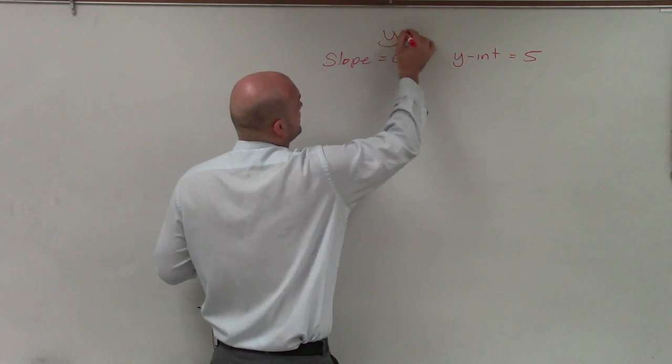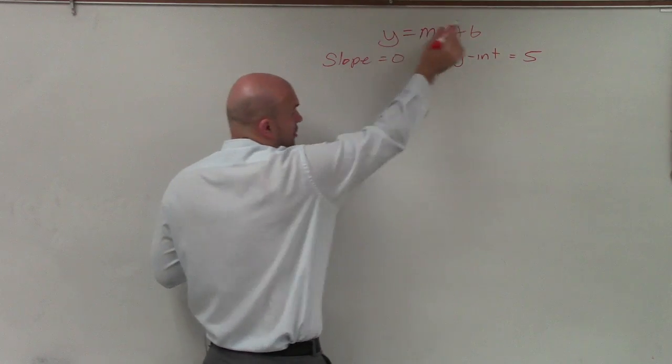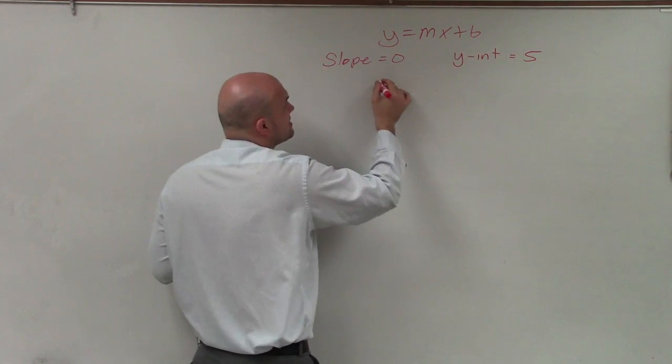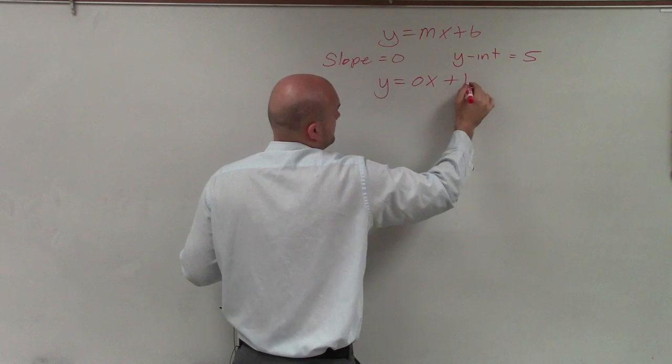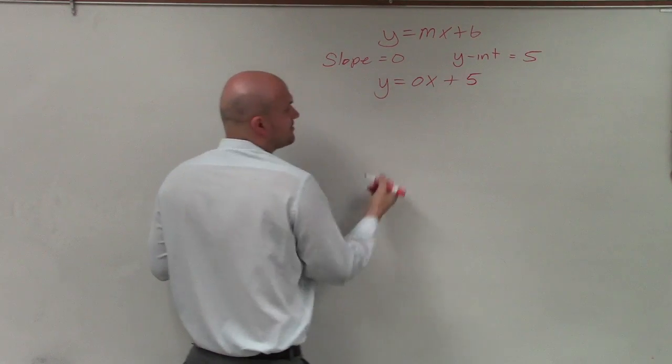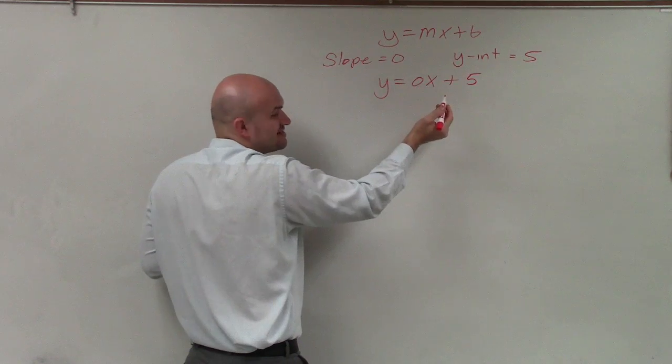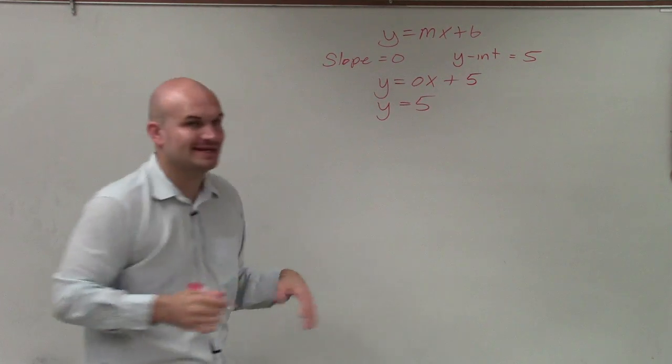If I take y in our slope-intercept form, y = mx + b, where m represents our slope and b represents our y-intercept, I would have an equation that looks like this. Since 0 times x is always 0, I'm really trying to graph an equation that is y = 5.